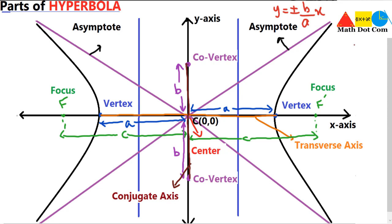Another important part of the hyperbola is the directrices. There are two directrices — one is called the directrix and two are called the directrices. One directrix is here and the other one is here. A directrix is used to define the hyperbola just like the focus. It is always perpendicular to the transverse axis, and its equation is x = ±(c/e²), where e is the eccentricity of the hyperbola. This equation applies when the transverse axis is along the x-axis; it will be different when the transverse axis is the y-axis.